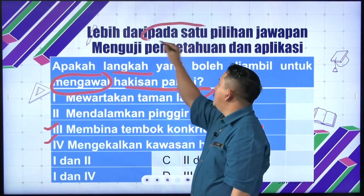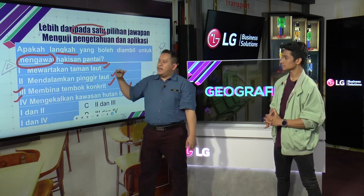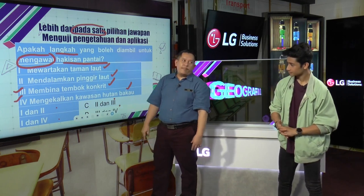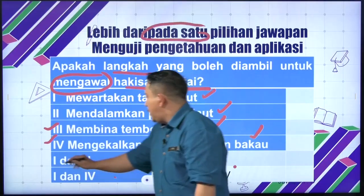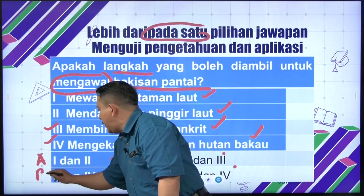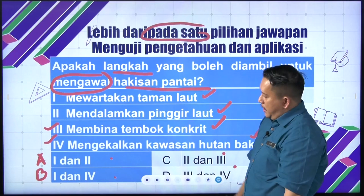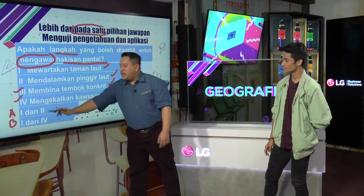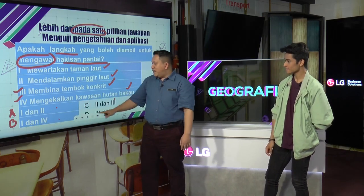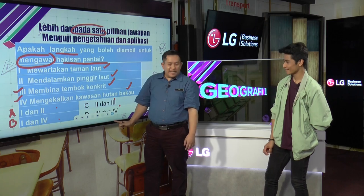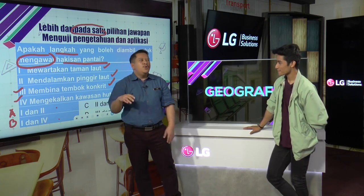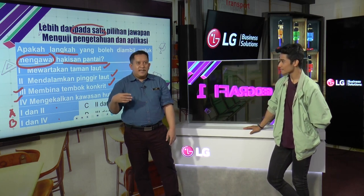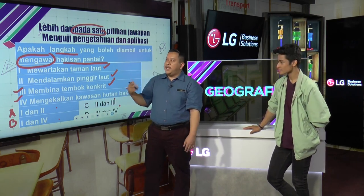Itu adalah lebih daripada satu pilihan jawapan. Lebih daripada satu tu maksudnya dua, tiga. Mungkin keempat-empatnya betul, tapi kita tengok pada pilihan jawapan. Dia bagi semua dua, maksudnya dia nak ada dua jawapan yang betul. Kalau dia bagi satu, dua dan tiga — tiga yang betul. Dulu-dulu ada pilihan 'semua di atas', tapi sekarang sebab kita tak nak terlalu mengelirukan, ia tidak digunakan lagi.